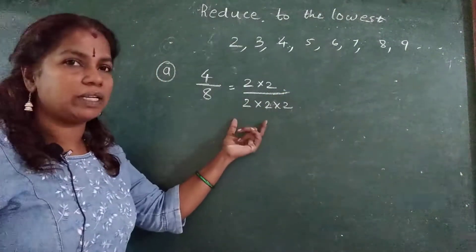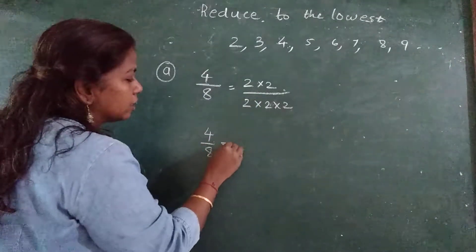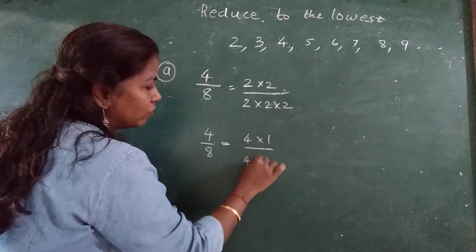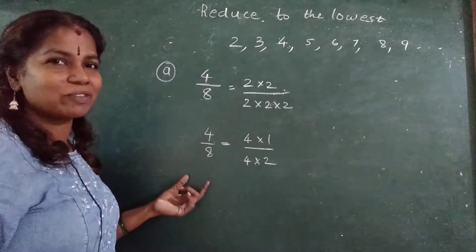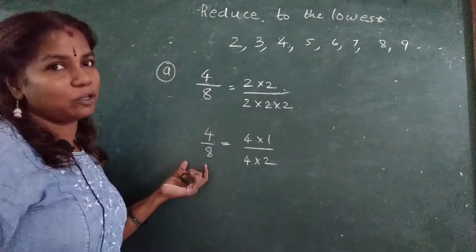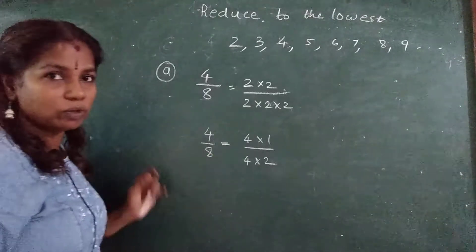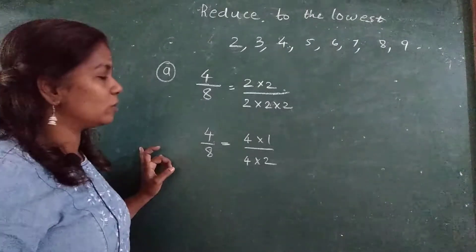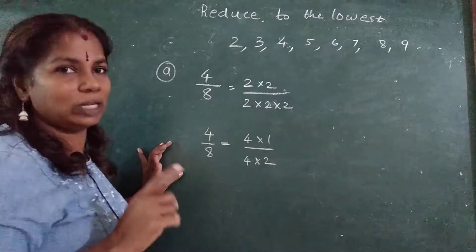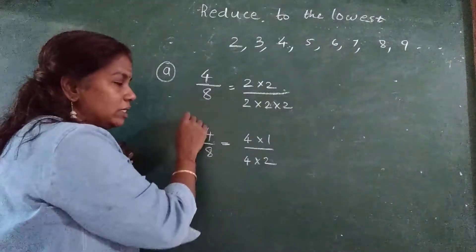What I have did? I have split it all. One more method is 4 upon 8 can be written as 4 into 1 and 4 into 2. Someone must have thought this method also. 4 upon 8 you can do it. But this is a very simple number, you know the table, so you are able to tell it. If I give you 3 digit number, 4 digit number, then how you will do? For that you have to study the tables also and at the same time you have to do certain calculations. It will be divisible by 5 or 2, like that you have to identify it.